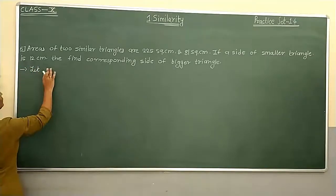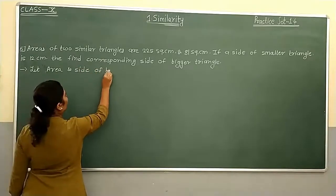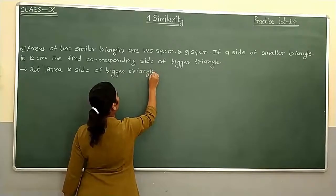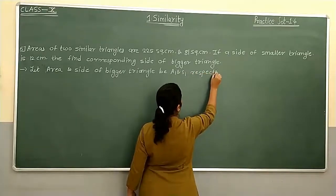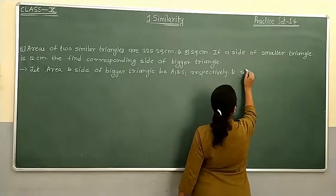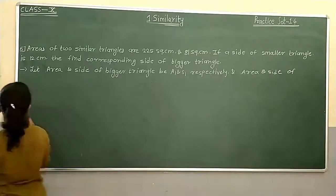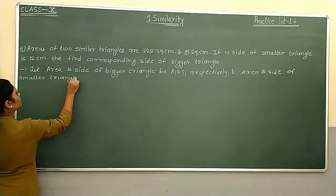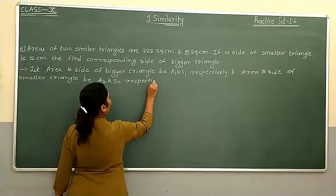Let the area and side of the bigger triangle be A1 and S1 respectively, and the area and side of the smaller triangle be A2 and S2 respectively.